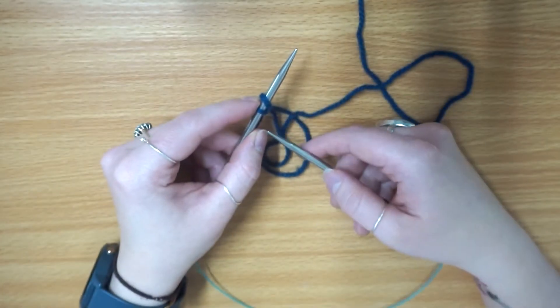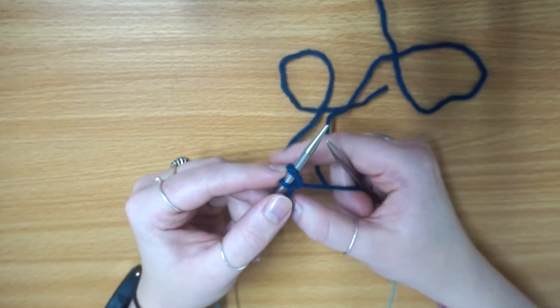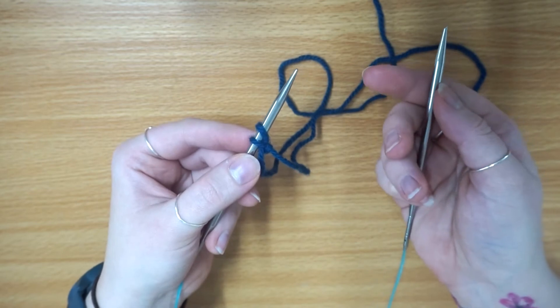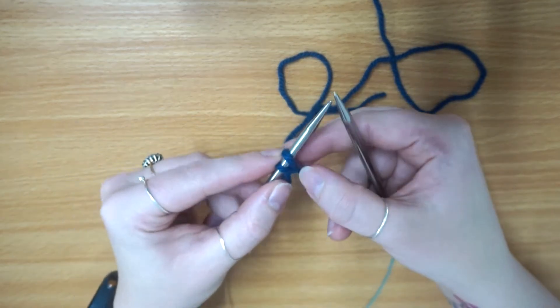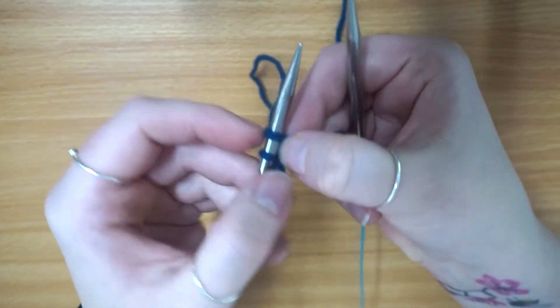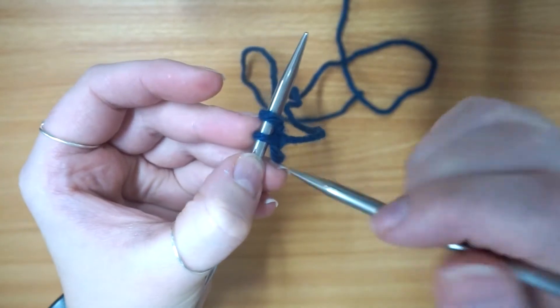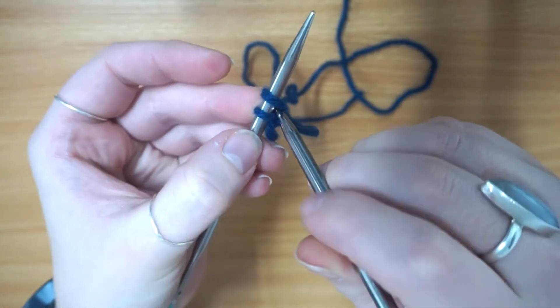If your pattern says cast on 10 stitches, now you've got two stitches on your needle. What you're going to do is go in between those two stitches. If you pull down a little bit, you can see I'm going to go in between the two stitches - I'm going to get my needle and go through there. I've literally just gone in between them, I haven't gone through any of the stitches, just between the two.